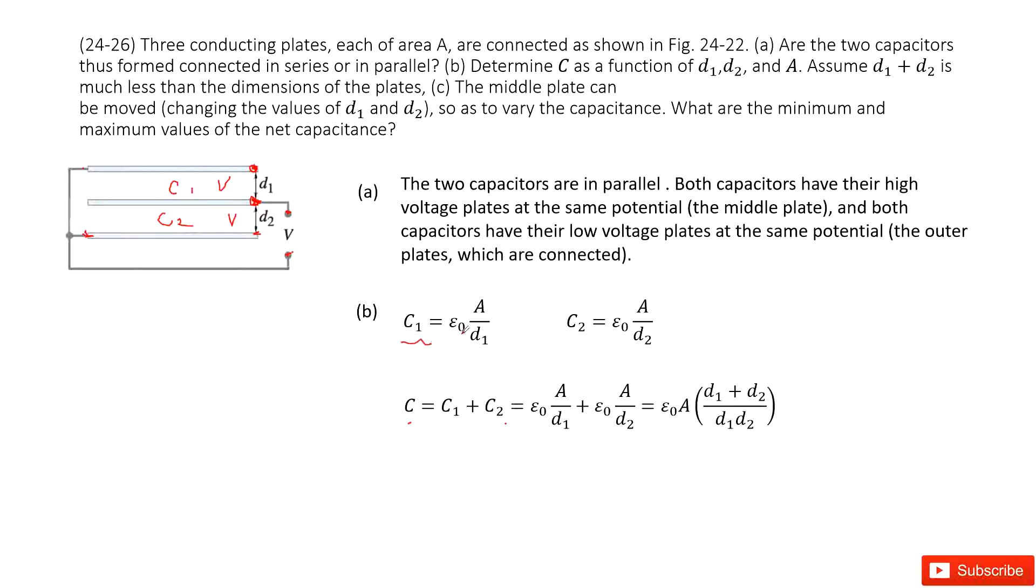By definition, C1 is epsilon naught A over D1. C2 is epsilon naught A over D2. You input C1 and C2 inside, you get function C there.